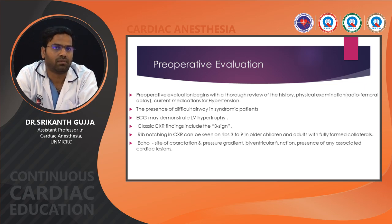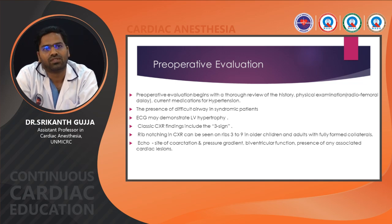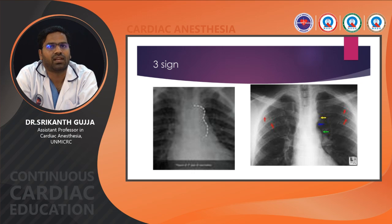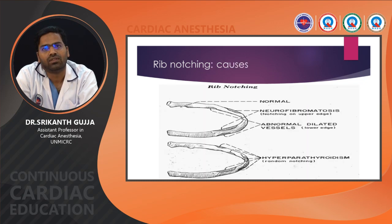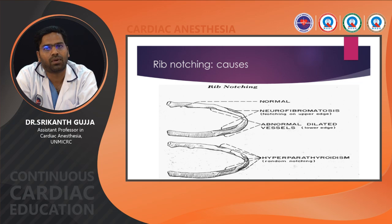If possible, measure the coarctation and the pressure gradient in suprasternal view, and check for biventricular function and presence of associated cardiac lesions. The '3 sign' can be seen on chest X-ray, as well as collaterals and rib notching. Rib notching can be normal or due to neurofibromatosis on the upper edge, or due to abnormally dilated vessels on the lower edge, or in hyperparathyroidism randomly on superior and inferior margins.